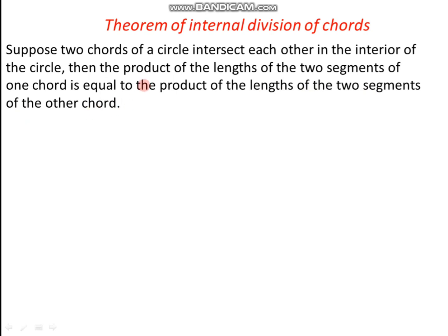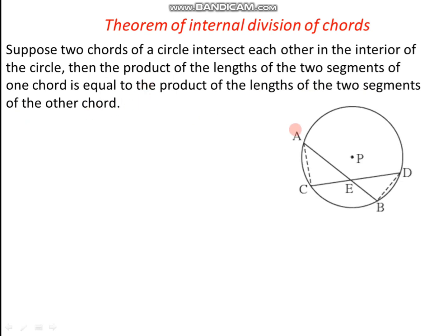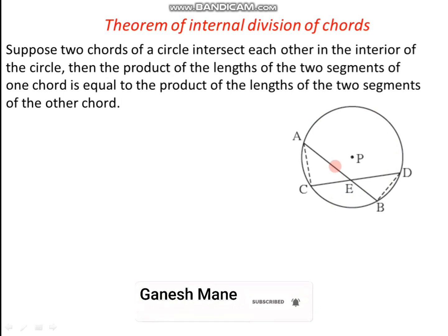Let us try to illustrate this by using a diagram. Suppose there is one circle with center P, and as we can see, chord AB and chord CD are intersecting at point E which is inside the circle. If it is the case, then we have to prove that the product of lengths of two segments of one chord — that means for chord AB, two segments are AE and EB, which are made due to the point of intersection E.